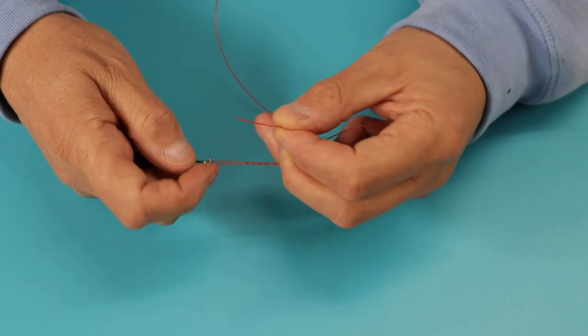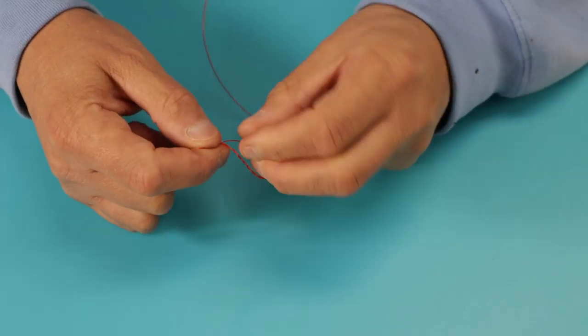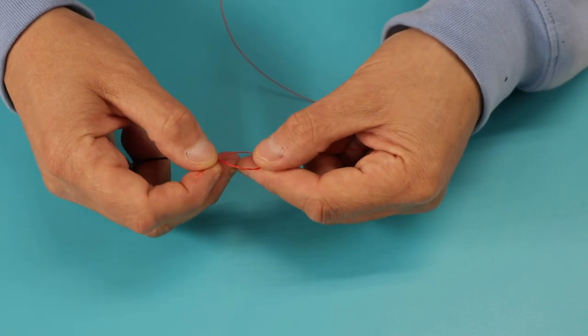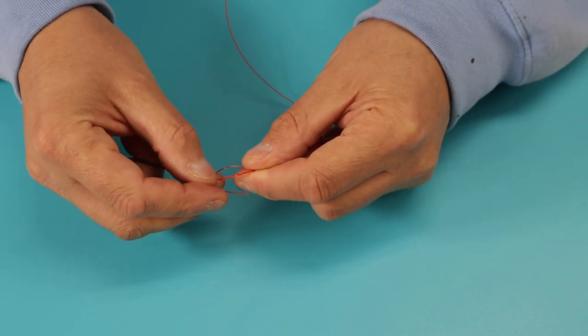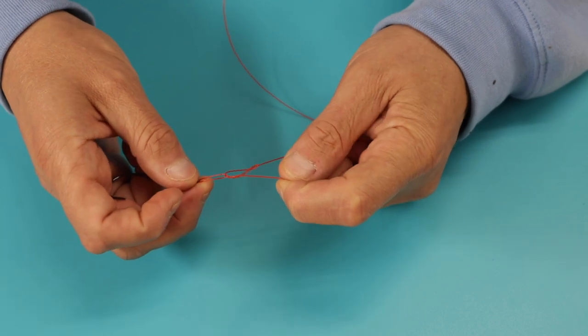Then take your tag end through the loop that you made in the first place and pass it through, and this will form a large open loop. Through that large open loop you pass your tag end and draw back against itself.